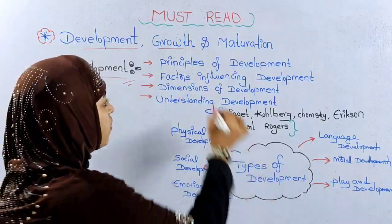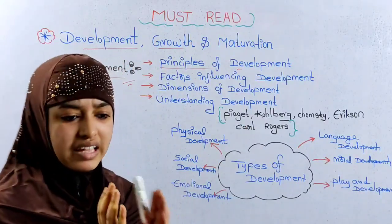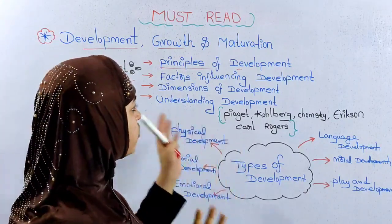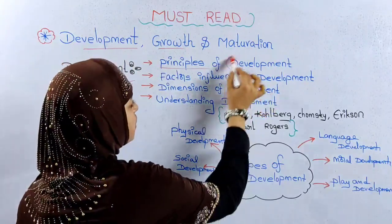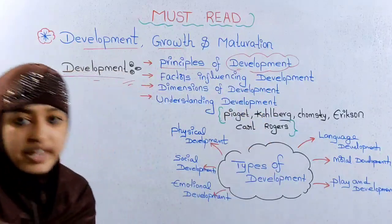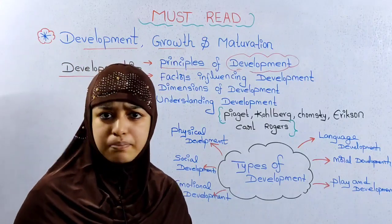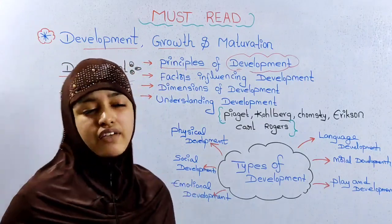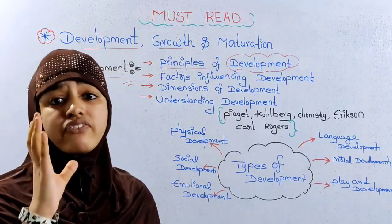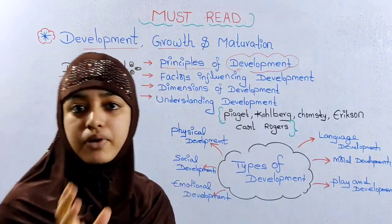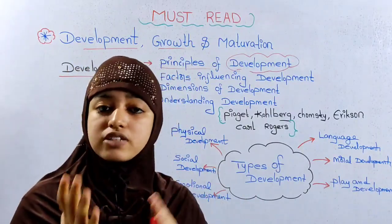We will discuss principles of development in English. Principles of development include: principle of uniform development, principle of formal pattern, principle of interrelation, principle of integration, and principle of direction. Principle of direction is very important.